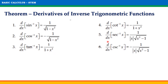d/dx of arcsec(x) = 1 / (|x| √(x² - 1)). And finally, d/dx of arccsc(x) = -1 / (|x| √(x² - 1)).